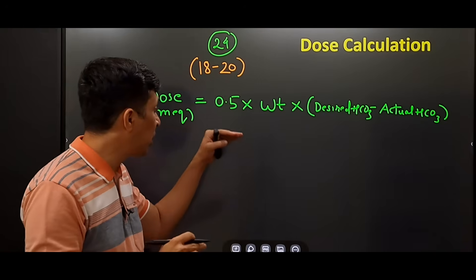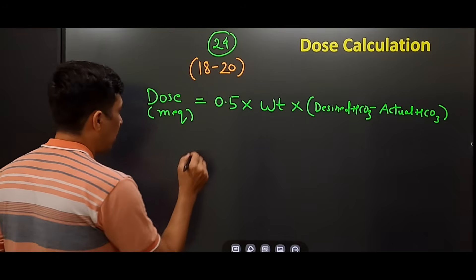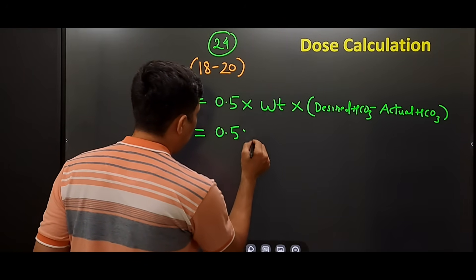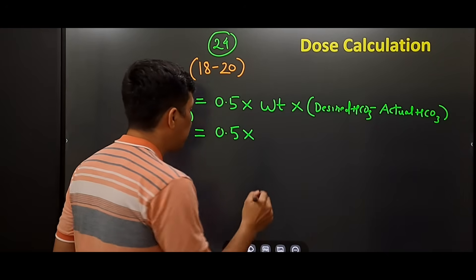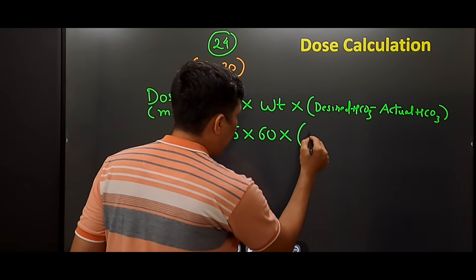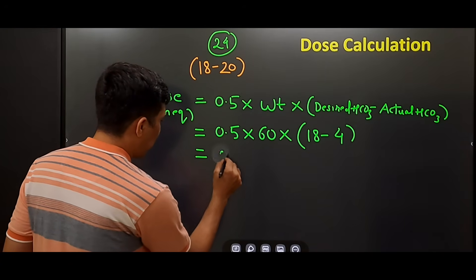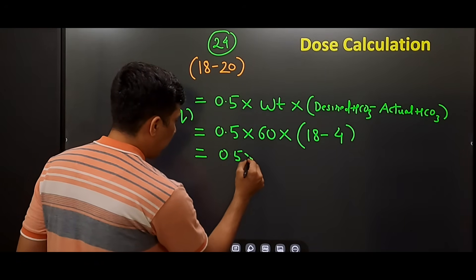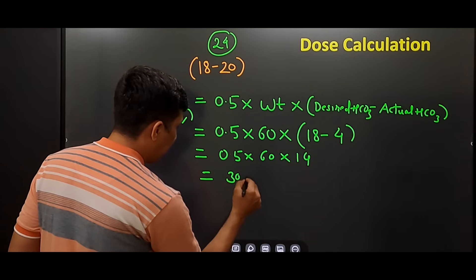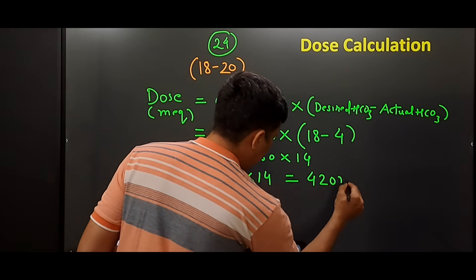Now we will see how this formula is actually used. The formula will be 0.5 multiplied by—let's say the weight of our patient is 60 kilograms. Our desired bicarb is 18 and the actual bicarb was 4. Now we solve this: 0.5 into 60 into 14 equals 30 into 14 equals 420 milliequivalents.